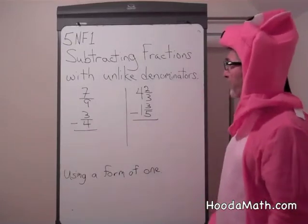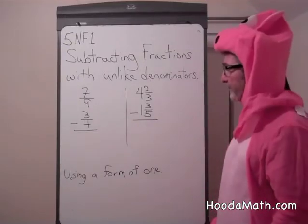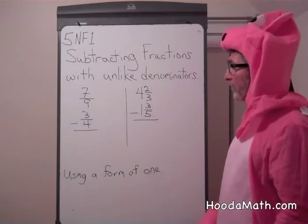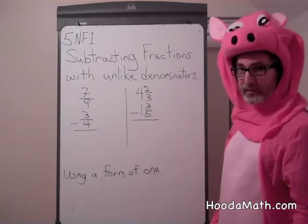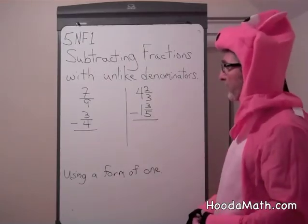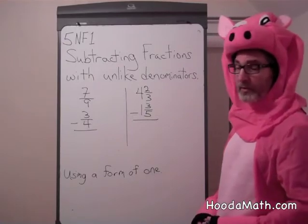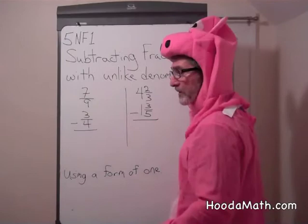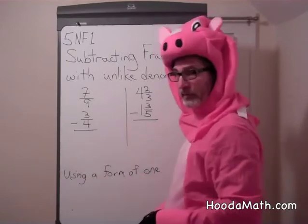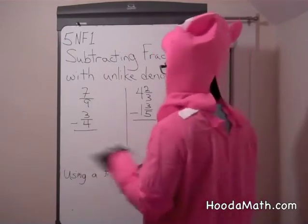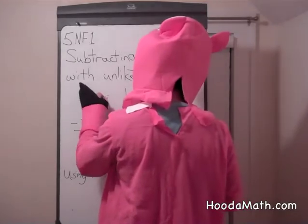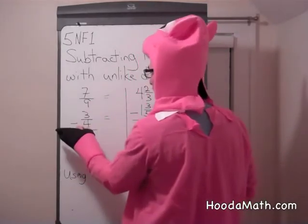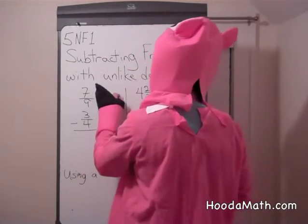Subtracting fractions with unlike denominators. When we subtract fractions or add fractions for that matter, we need common denominators. We use the two bottom numbers of the fractions and multiply them together to get the common denominator. 4 times 9 or 9 times 4 is 36.